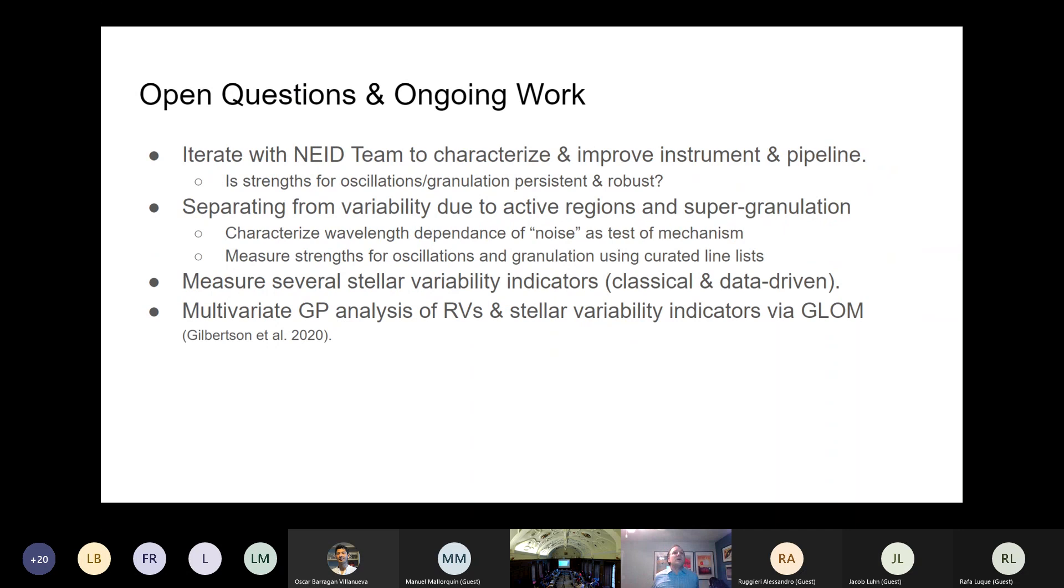So of course there's always more work to be done. Thinking of some of the open questions, we're iterating with the NEID team to try to characterize and improve the instrument and pipeline. So asking questions like, do we see the strength for oscillations and granulation to be persistent and robust? That would suggest to me that it's stellar, whereas if we saw that there's extra oscillations in January but not in March, that would look to me like we need to figure out what's going on in the instrument. So we're trying to iterate with them and the software team as we gradually improve things. There's still some room for improvement, but I think it's already doing quite well.